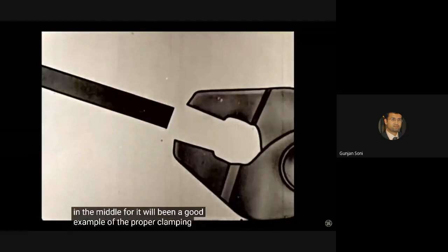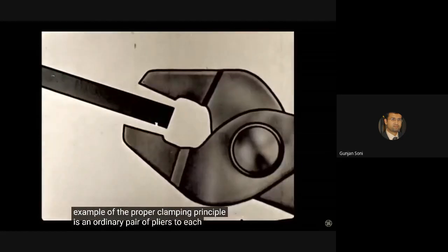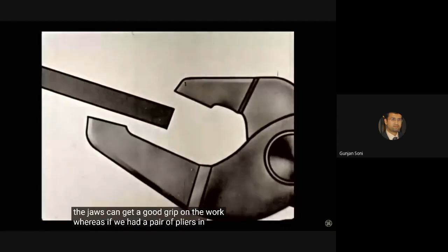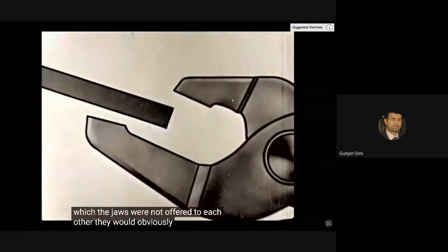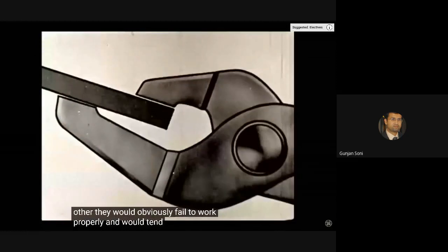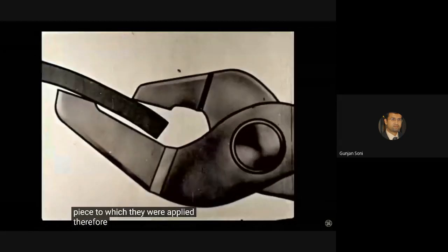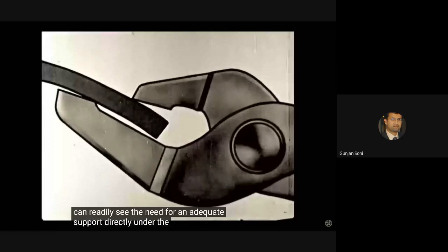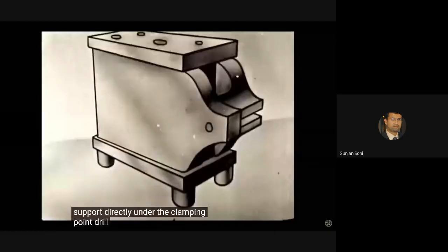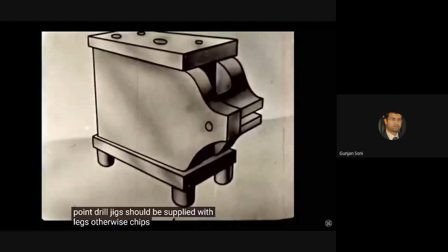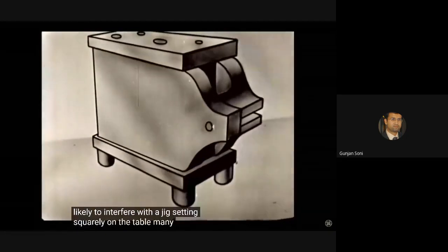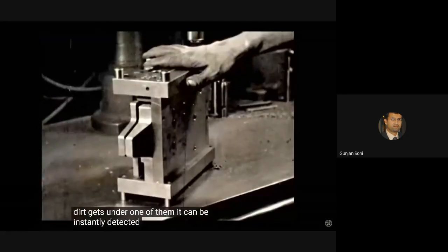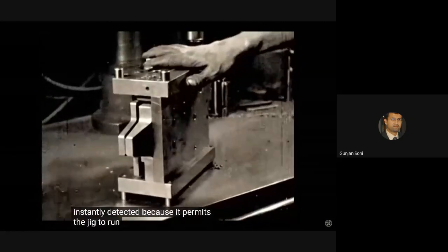The work should be supported as nearly in line with the tool thrust as possible. In this case the work is not adequately supported and the thrust tends to bend the work. Another thing, the leverage of the extended work requires more clamping pressure to secure the piece. When the clamping jaws are more nearly in line with the thrust, the work is much better supported against the pressure applied by the tool. A fixture should always be designed so that the tool pressure comes against the solid part of the fixture and not against the movable or clamping portion.